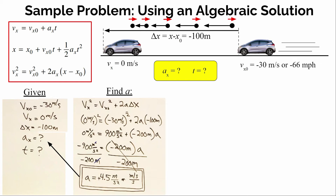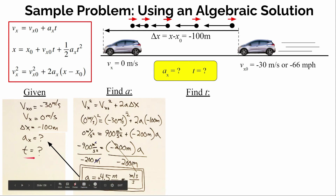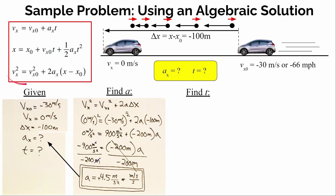Now we need to solve for time. We can add acceleration (4.5 m/s²) to our list of knowns; the only remaining unknown is time. We need an equation that contains 't'. The third equation has no 't', so it won't work. The first equation has just 't', while the second has both 't' and 't²', requiring a quadratic. To keep it simple, let's use the first equation.